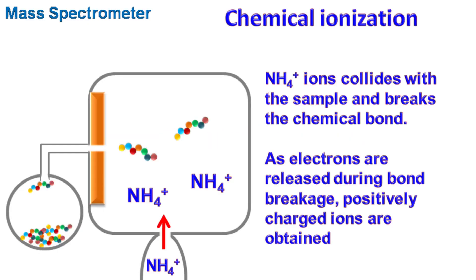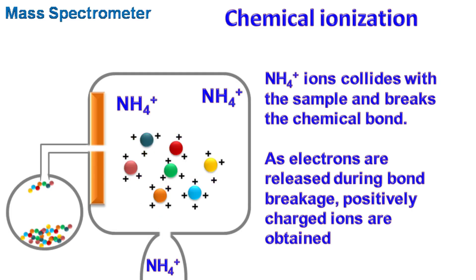Chemical ionization: In this method we use molecular ions such as methane ion or ammonium ion instead of electrons. Because ammonium ions or methane ions are large in size as compared to an electron, the probability of ionization of sample molecule increases even more.